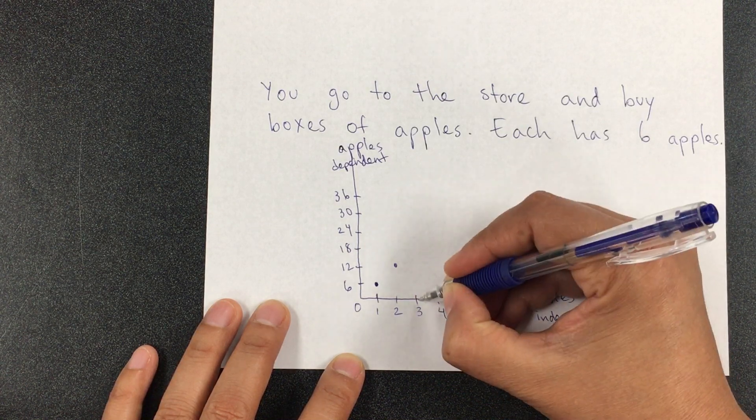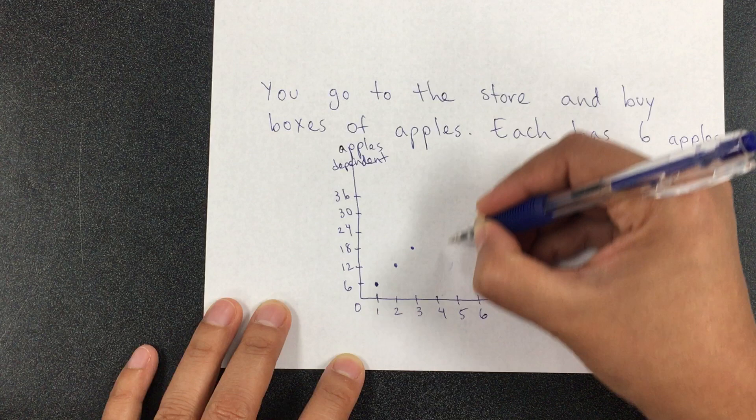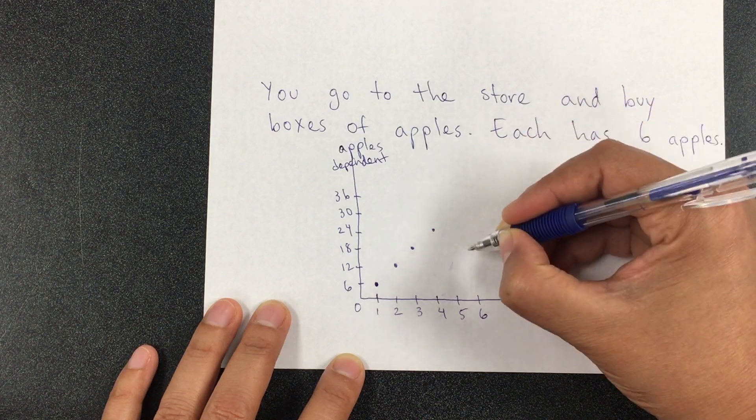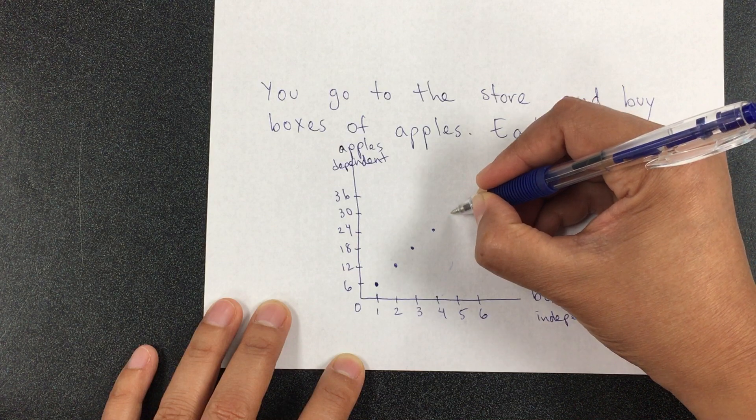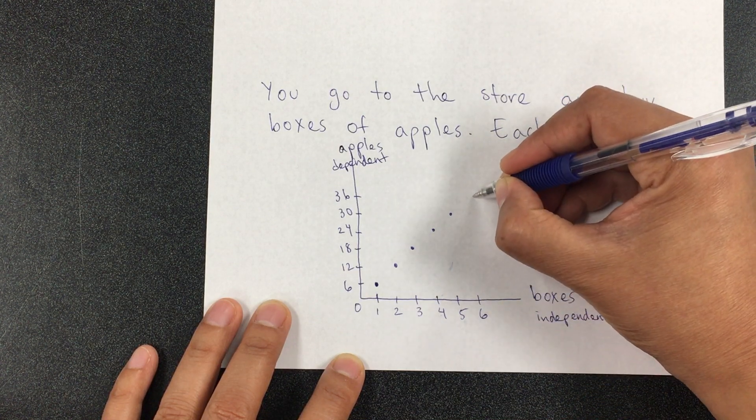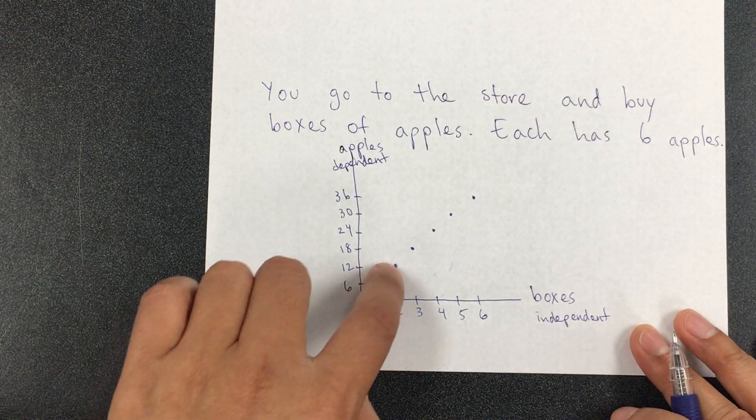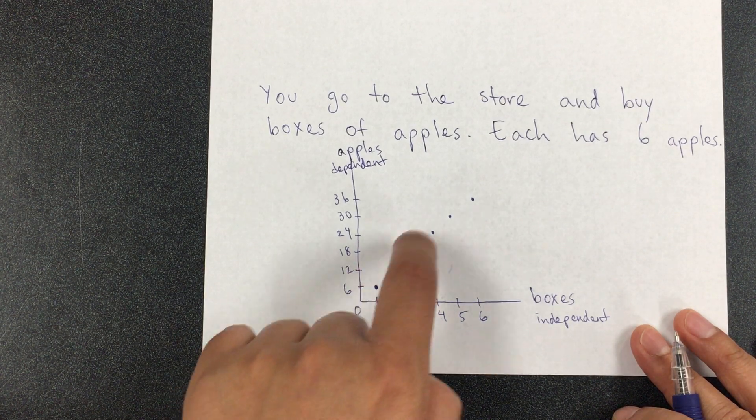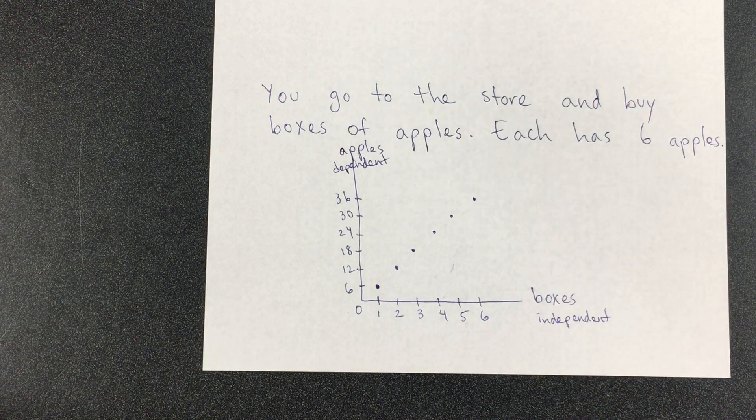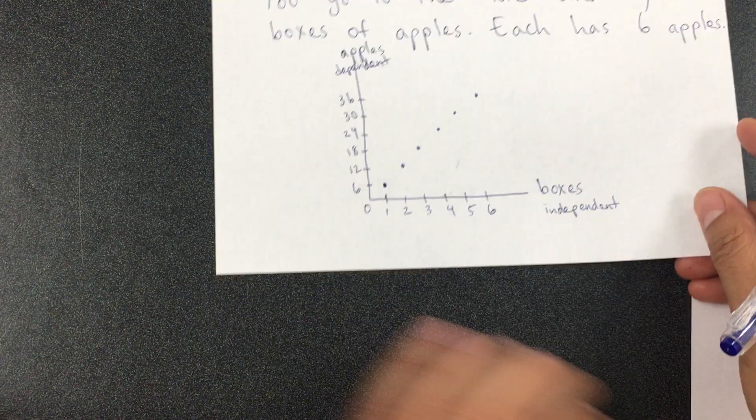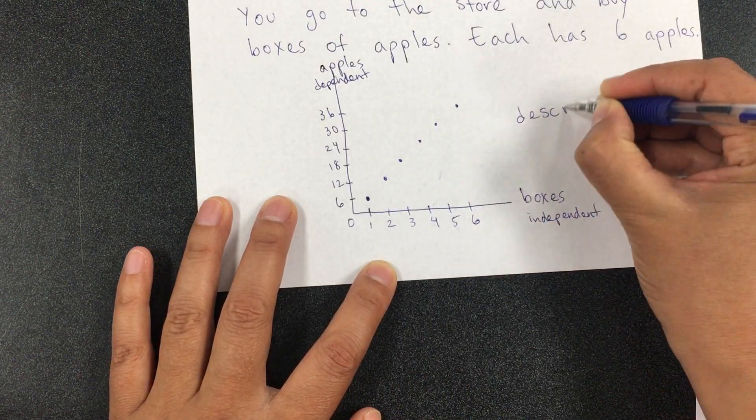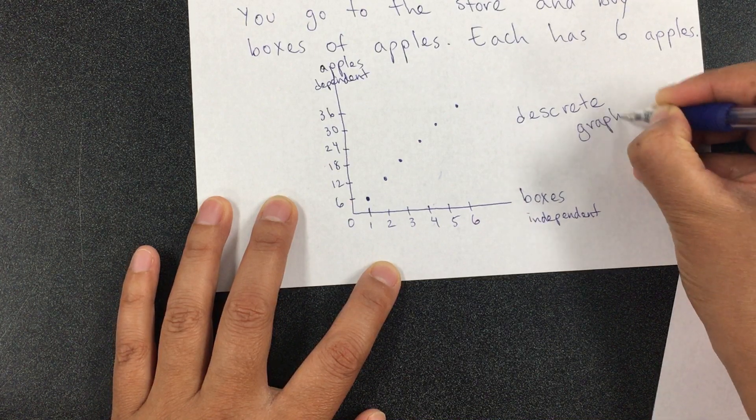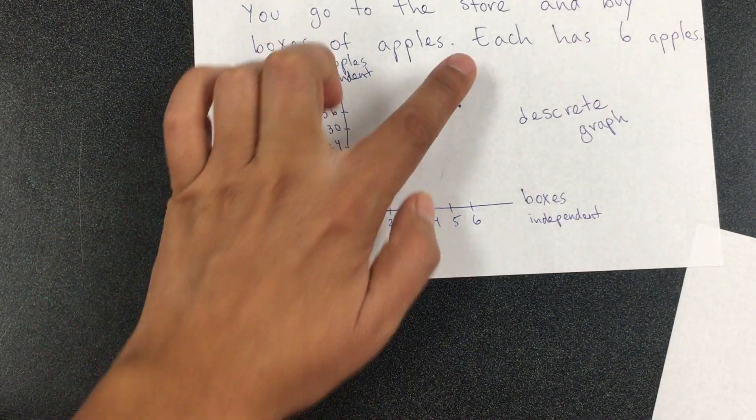But if it's in boxes, then you would be using a discrete graph. Two boxes is 12 apples. Three boxes is 18 apples. Four boxes gives you 24 apples. Five is 30, and six is 36, and so on. I cannot connect it because you buy in packages of six. You have to buy each time per box. This is a discrete graph. You do not connect it. It's not continuous. It's discrete.